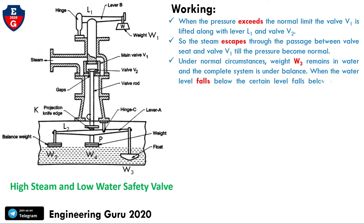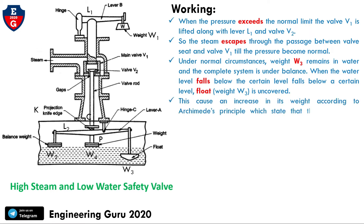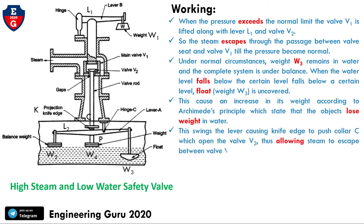Under normal circumstances, weight W3 remains in water and the complete system is in balance. When the water level falls below a certain level, the float W3 is uncovered. This causes an increase in its effective weight — according to Archimedes' principle, objects lose weight when immersed in water. This swings the lever, causing the knife edge to push the collar, which opens valves V1 and V2, allowing steam to escape.